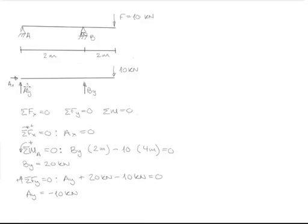The minus indicates that the arrow is actually pointing in the opposite direction. This sums up this example in statics. Thank you all for listening.